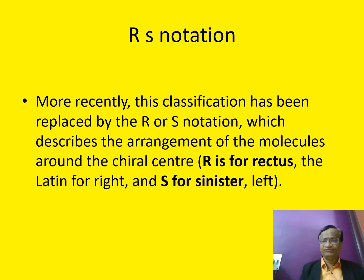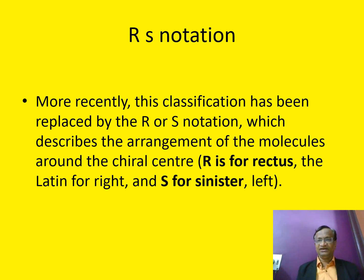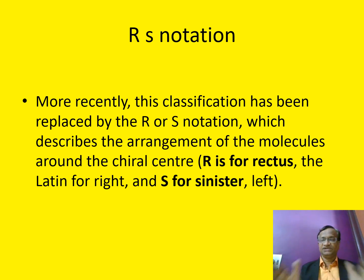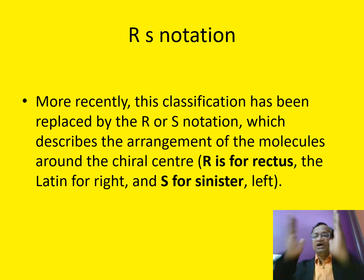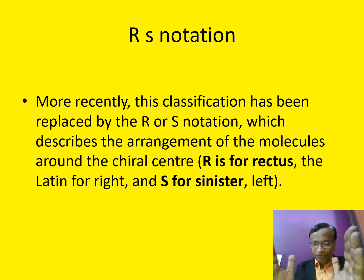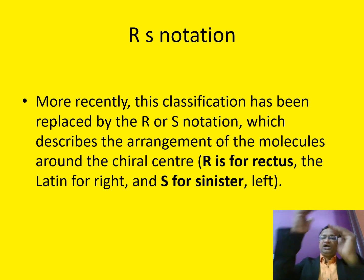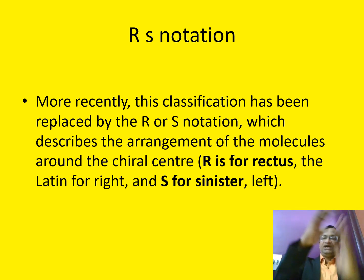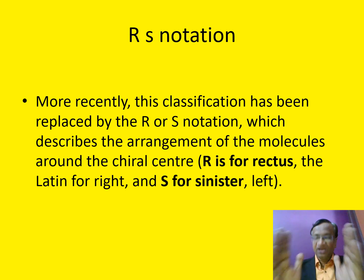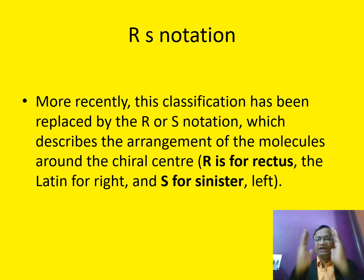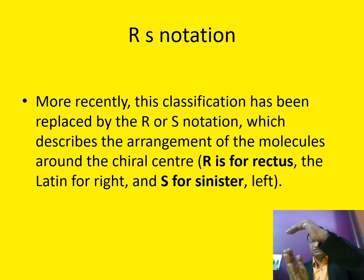For example, ketamine, bupivacaine, and levobupivacaine are all related to this. Levo means the optical isomer rotates the plane of polarized light to the left, while dextro means the plane of polarized light rotates to the right.